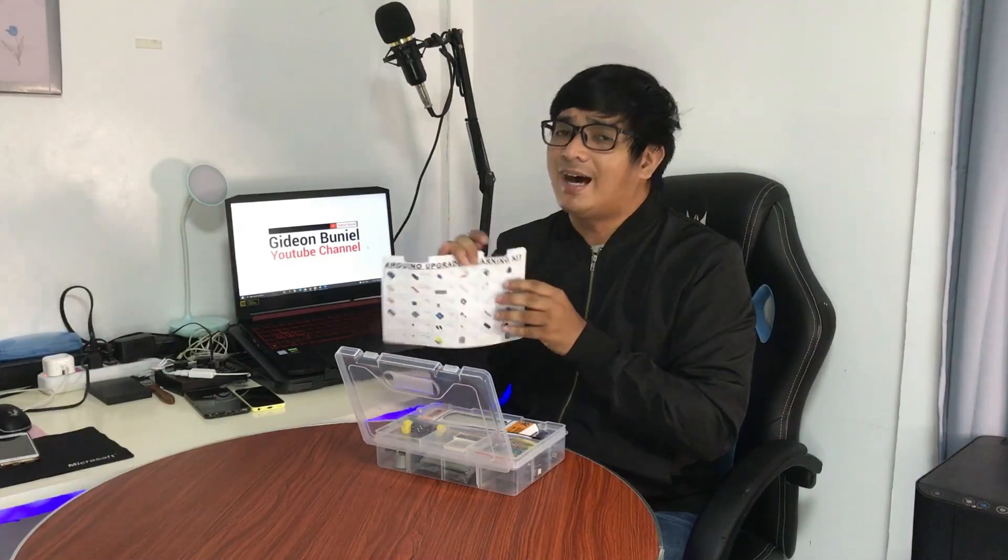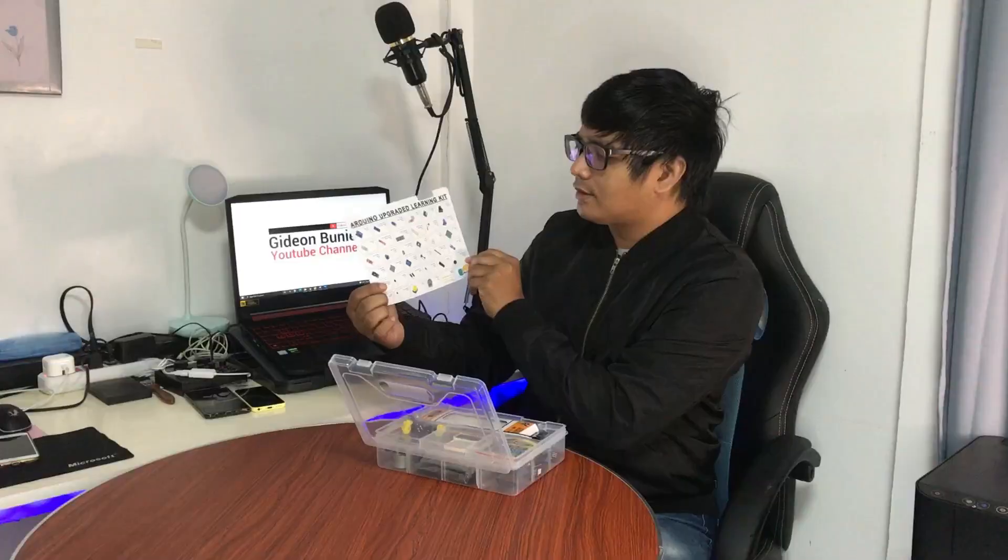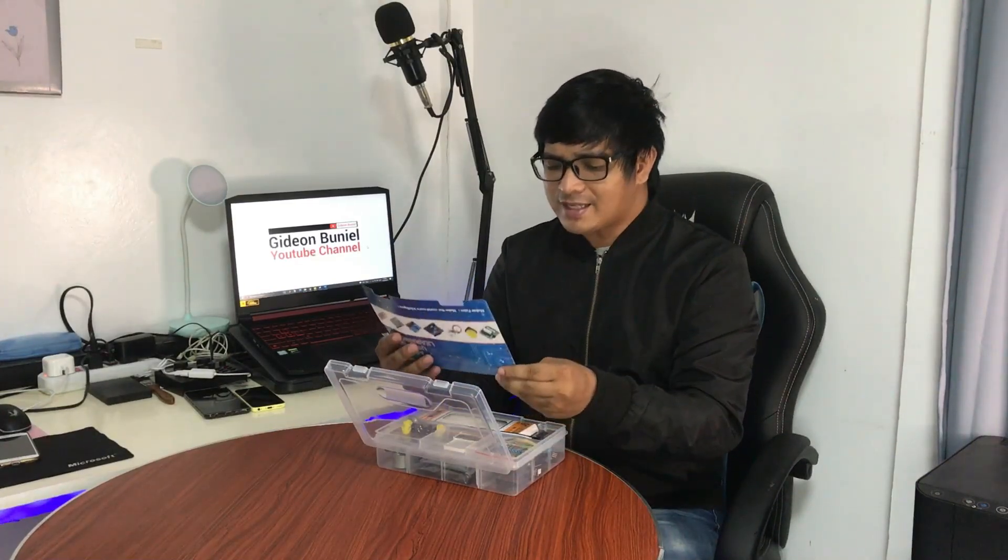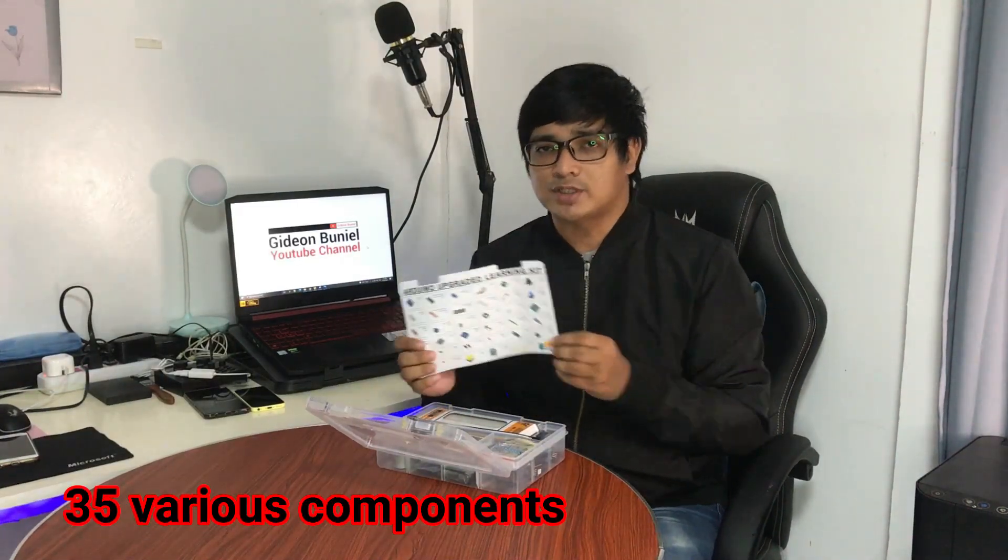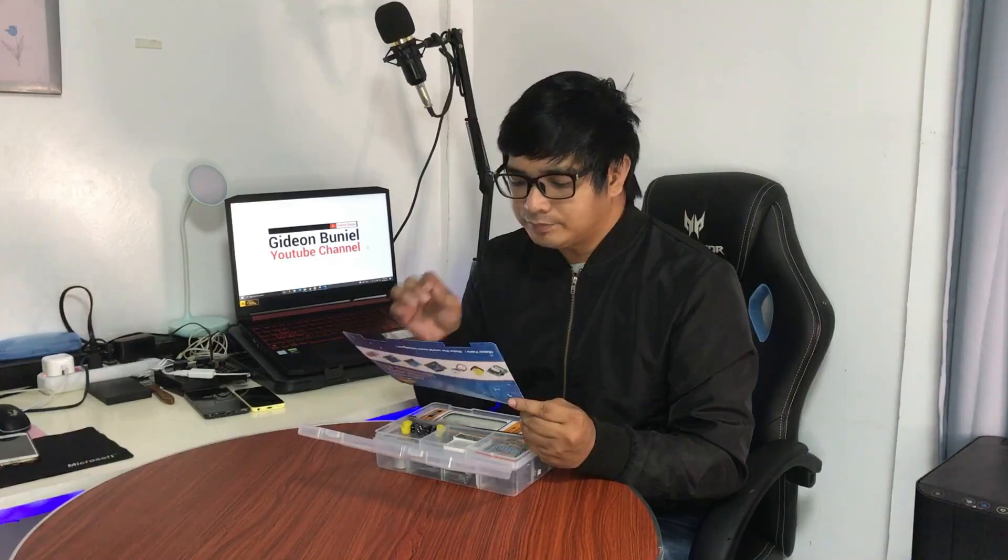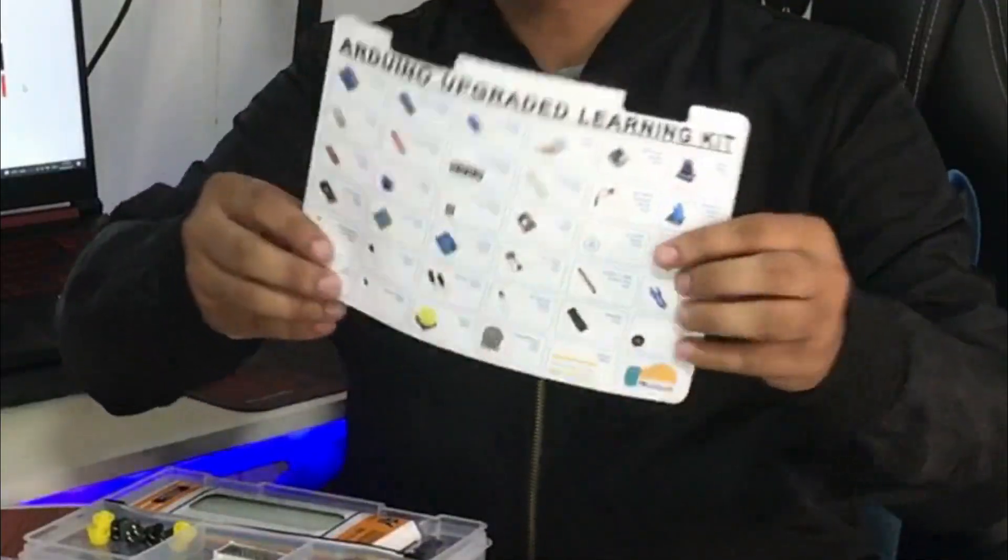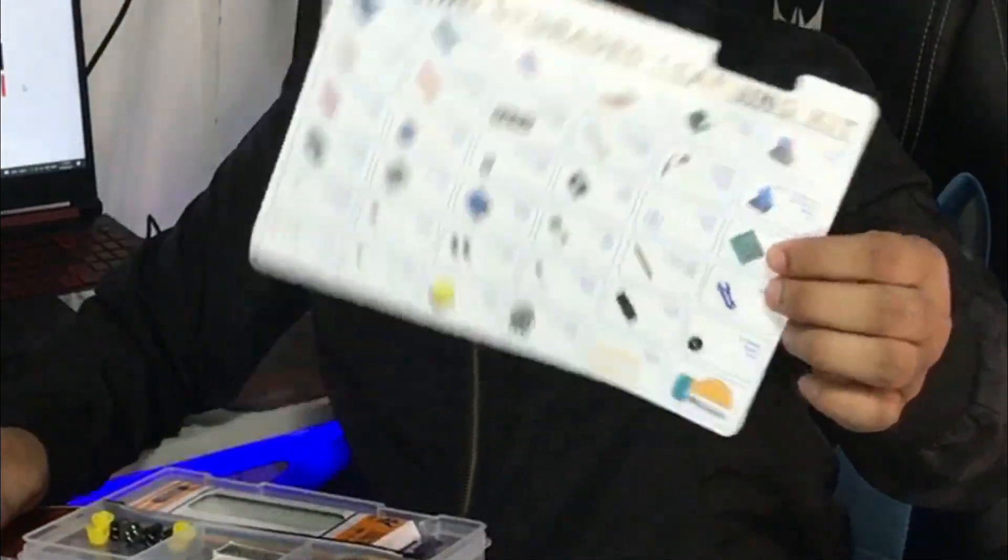So what's inside the Arduino upgraded learning kit? Basically if you buy this one you will be having a guide on what are the inclusions of this kit. So basically for this Arduino kit that I have, it has 36 sensors including the resistors, so we will be introducing one by one.